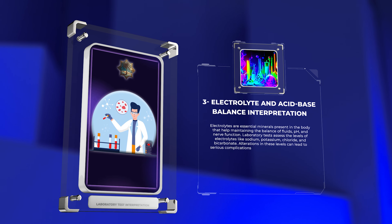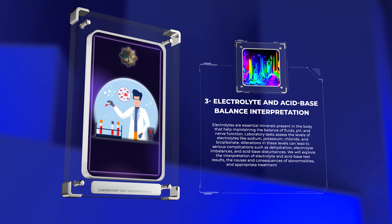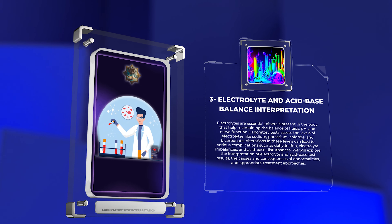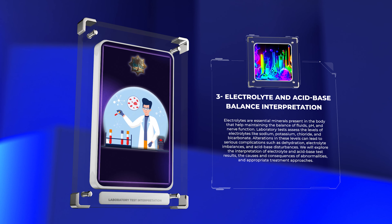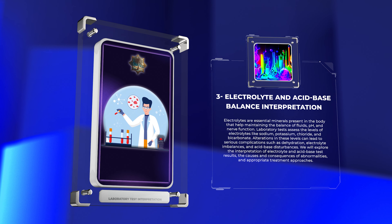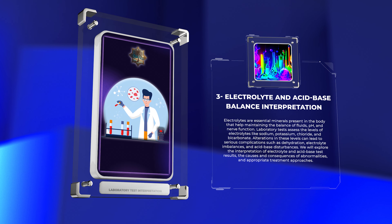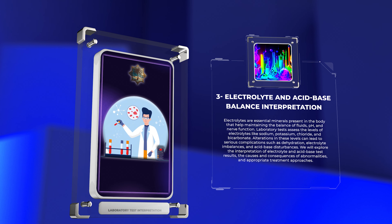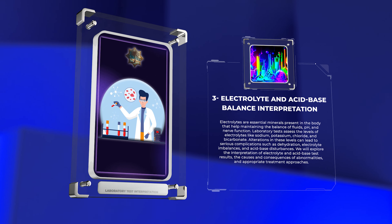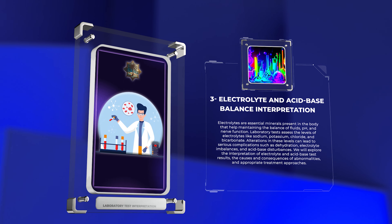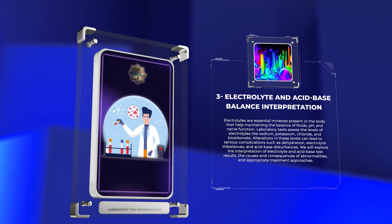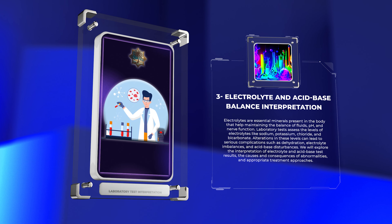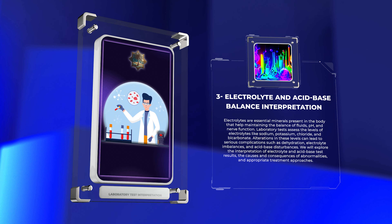Electrolytes are essential minerals present in the body that help maintain the balance of fluids, pH, and nerve function. Laboratory tests assess the levels of electrolytes like sodium, potassium, chloride, and bicarbonate. Alterations in these levels can lead to serious complications such as dehydration, electrolyte imbalances, and acid-base disturbances. We will explore the interpretation of electrolyte and acid-base test results, the causes and consequences of abnormalities, and appropriate treatment approaches.